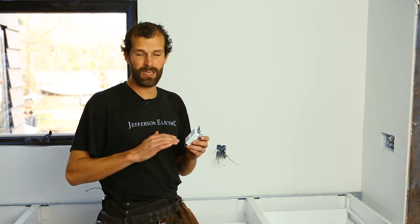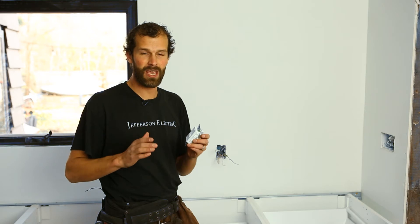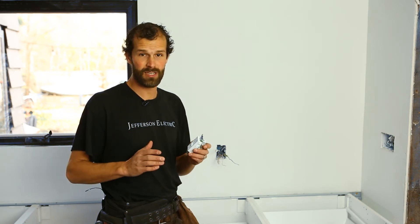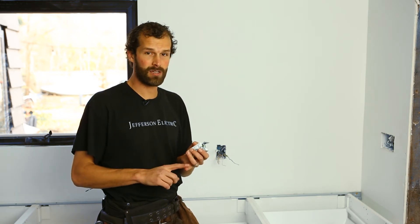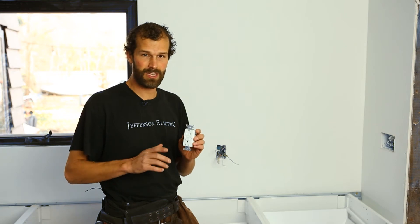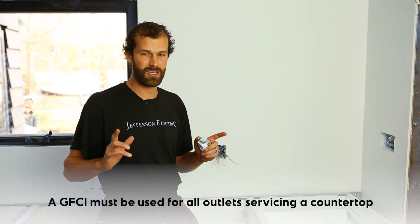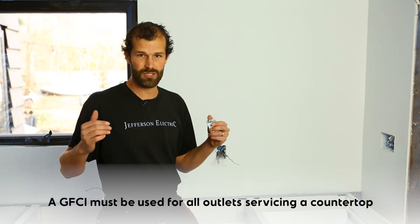One, it's a code requirement. GFCI protection in the form of either a breaker or a receptacle is required for a variety of outlets, but specifically all outlets in a kitchen that service a countertop. We're going to talk more about that in a moment.